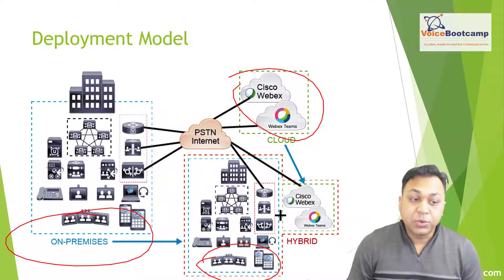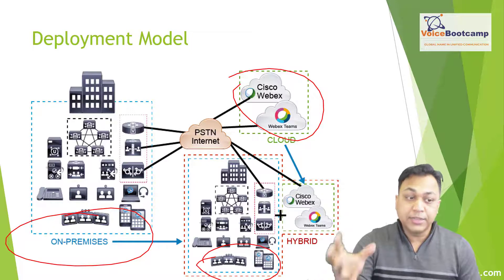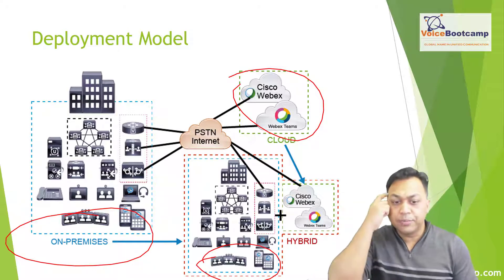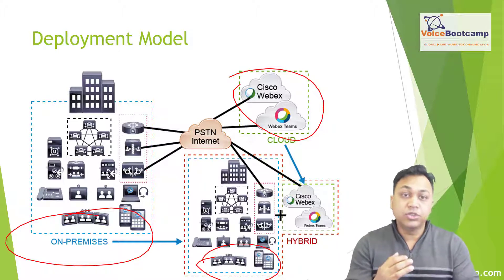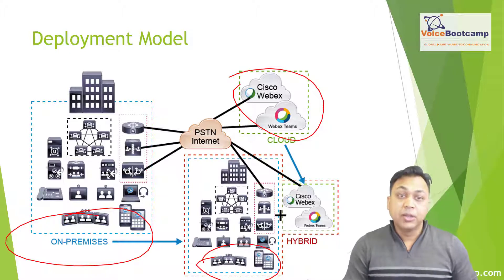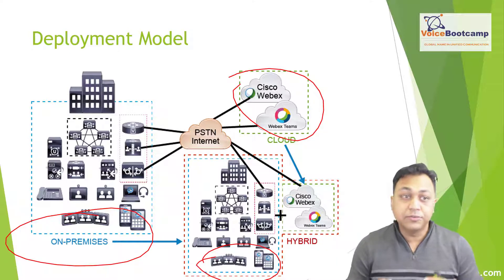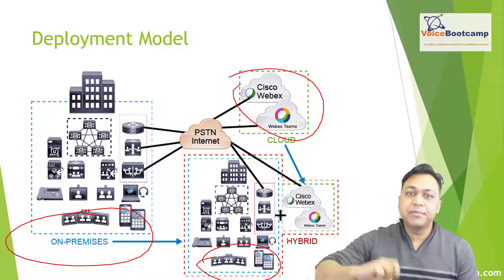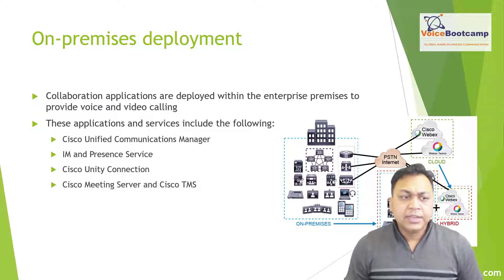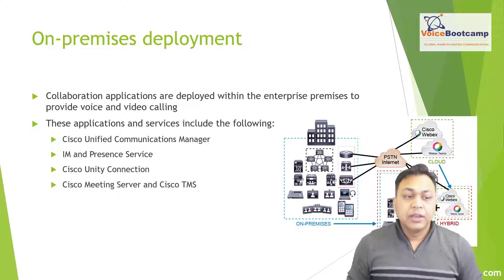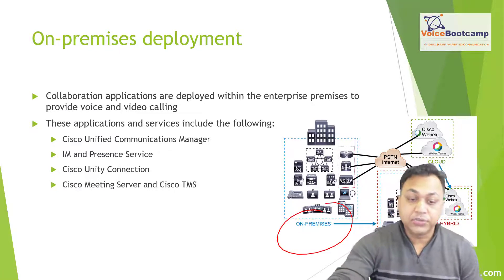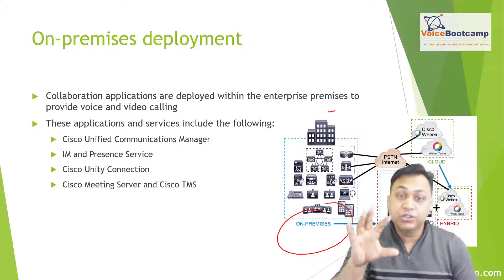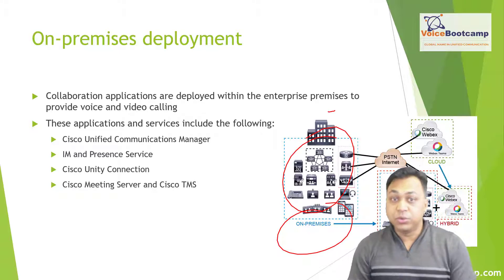So you want to create a hybrid type of solution, which depends on the type of company you are. In an on-premise network, you would have some of the core components residing in your local data center and then integrate with the cloud for various services. Your main call control or call manager solution or IP telephony solution could be internally managed. The on-premise deployment could include a single site or multi-site with centralized cloud processing, but the core software, solutions, or devices will be stored in your own data center.